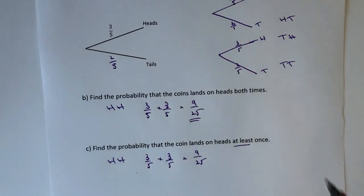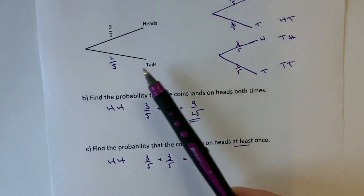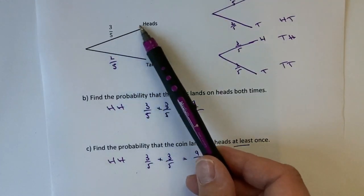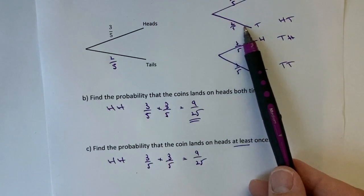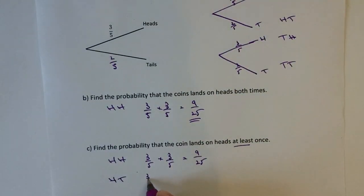Okay, so the next one I was interested in was heads tails. Okay, so it's going to land on heads once. So again, we look across and I've got three fifths multiplied by two fifths. Okay, so heads tails is going to be three fifths multiplied by two fifths which is going to give us six twenty-fifths.